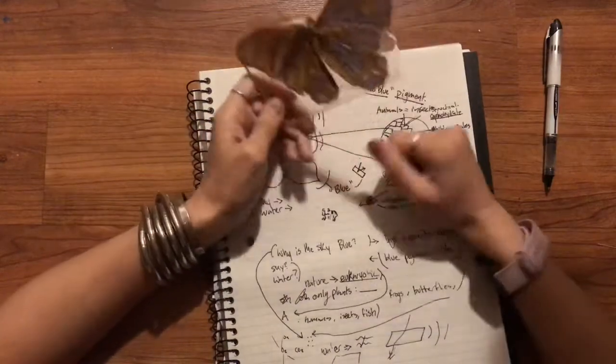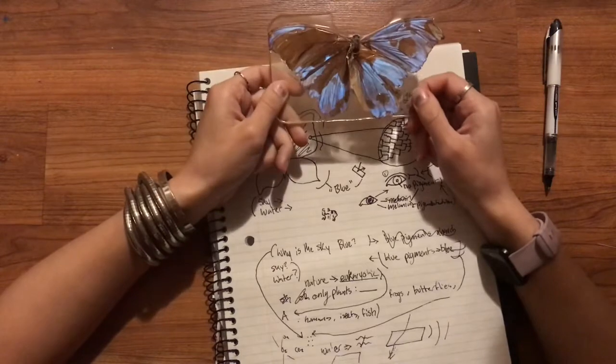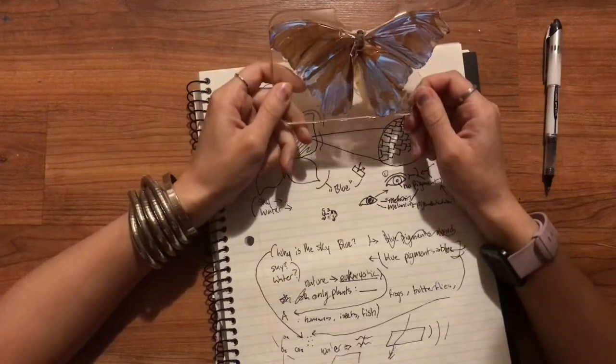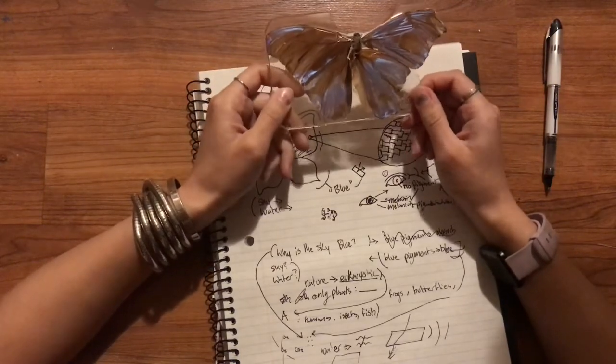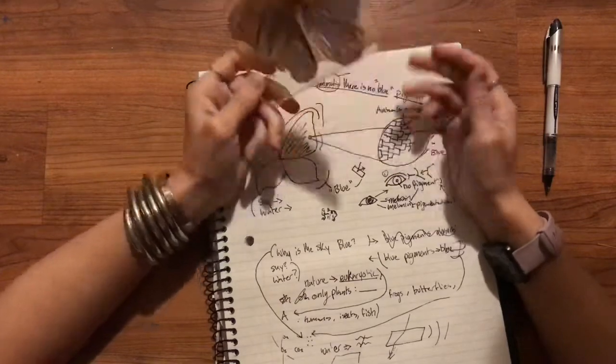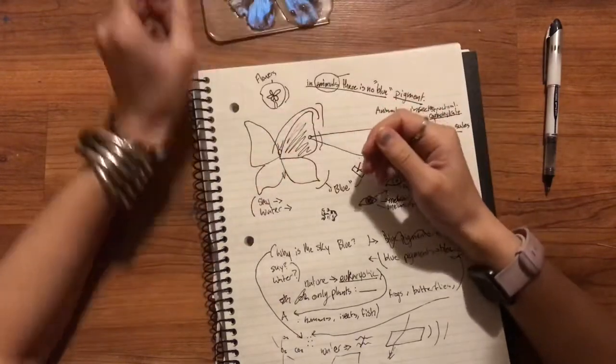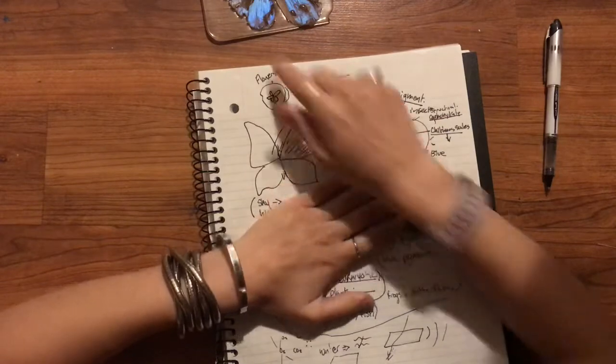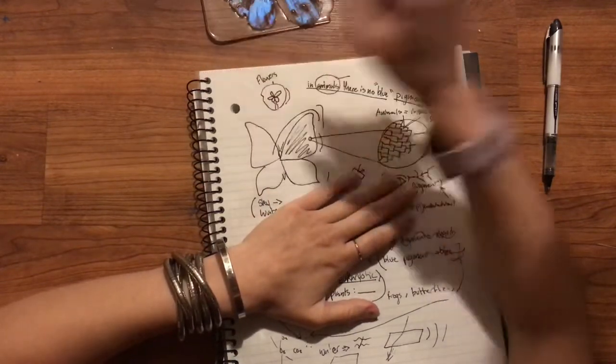So that is why when you are preserving, specifically butterflies that are blue or green, you have to do shadow boxes. Do not try to preserve them in resin. Save your butterflies.